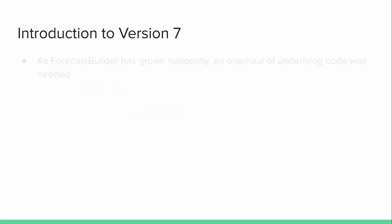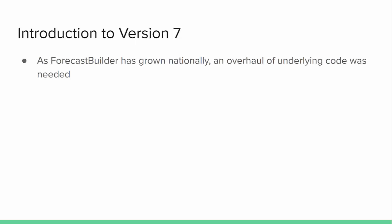Let's talk about version 7. As Forecast Builder has grown nationally — initially started in central region but now expanded beyond — we've required an overhaul of the underlying code. What we had in place was a lot of band-aids in previous versions as Forecast Builder was growing. We also wanted to bring in the use of Python dictionaries. Before it was a lot of just variables, but this was definitely needed to help simplify and organize the code.